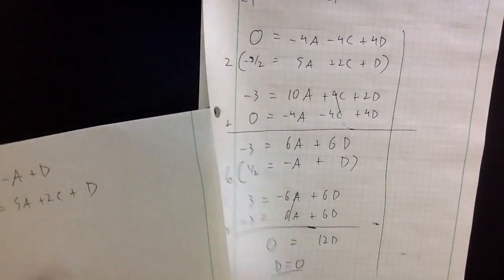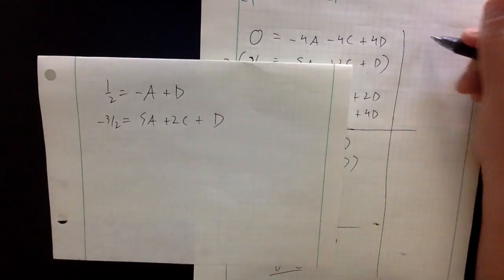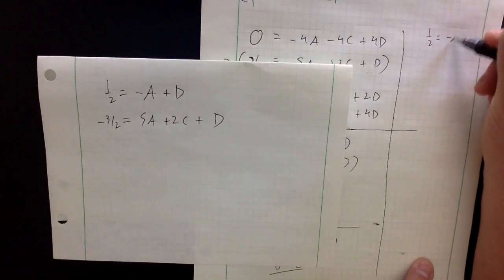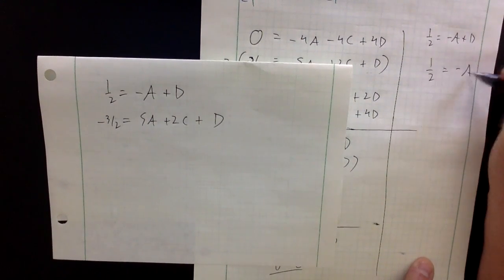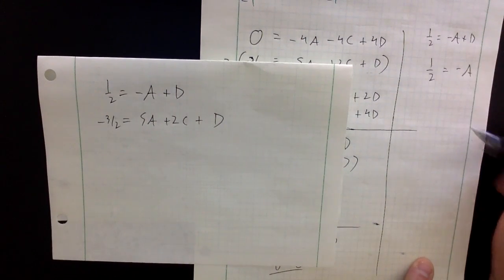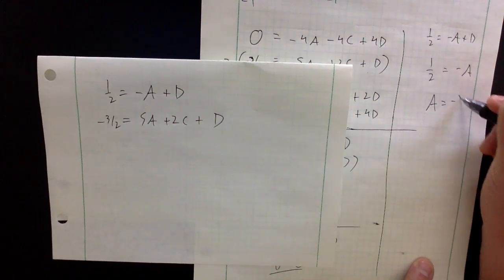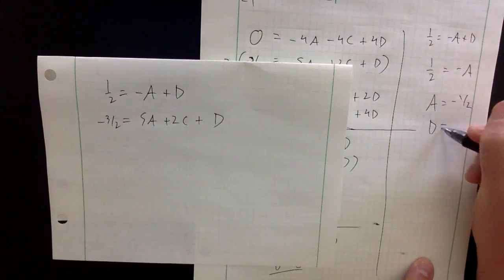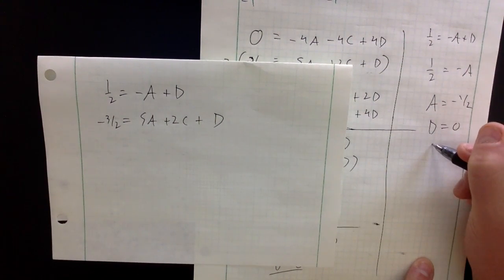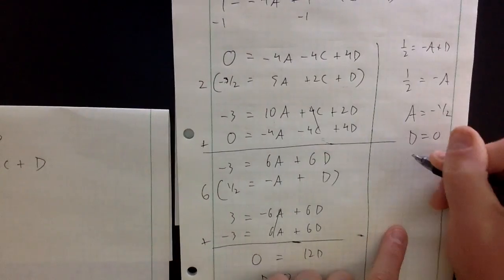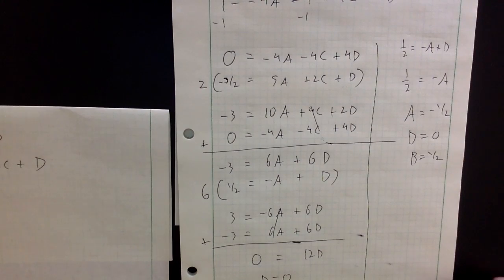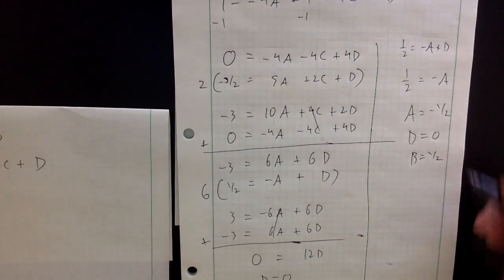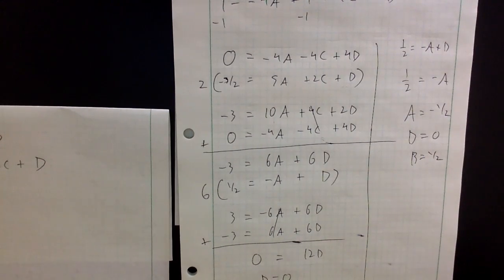With D equals 0, going back to one half equals minus A plus D: minus A equals one half, so A equals minus one half. So far: A equals minus one half, B equals one half, D equals 0.